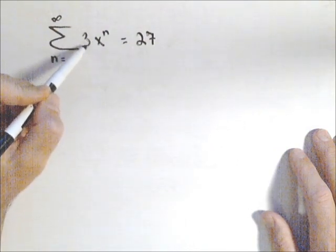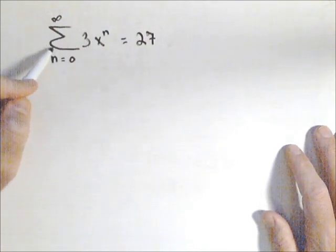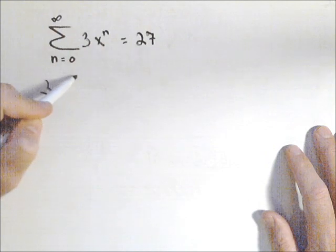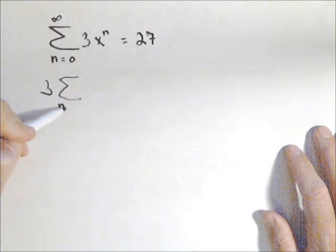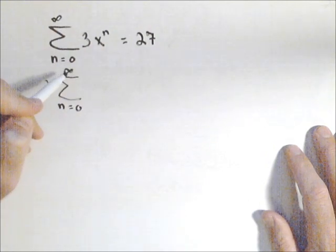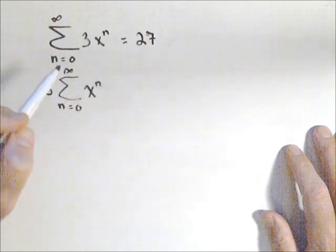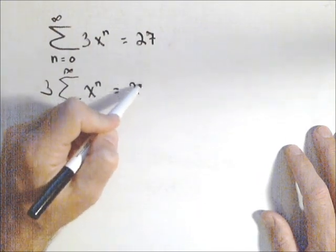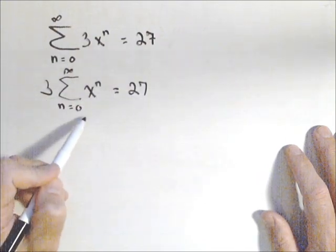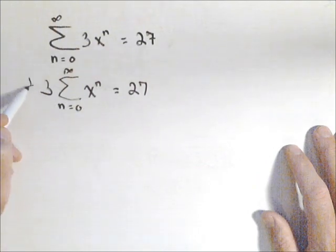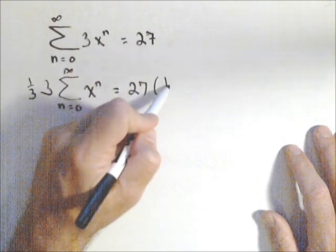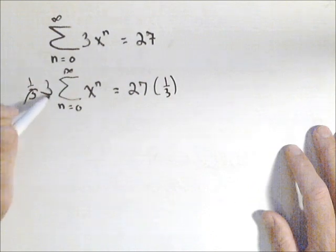So what we can do, well first off, by properties of summations, I can pull that three out front and I have the summation of n equals zero to infinity of just x to the n equals 27. Now the advantage to doing that is I can now divide both sides by three or multiply them by one third, might look a little nicer with the way we have this written.